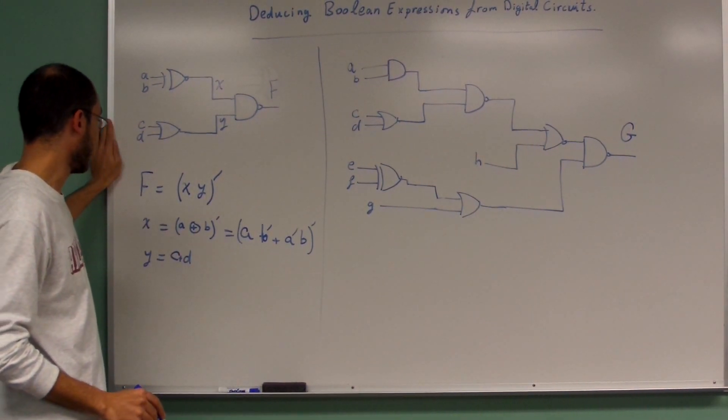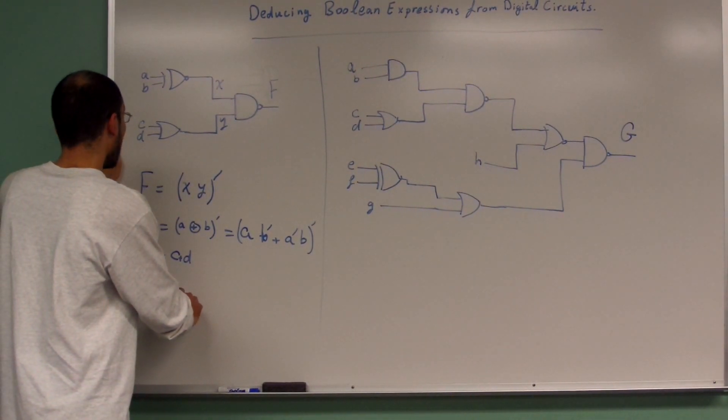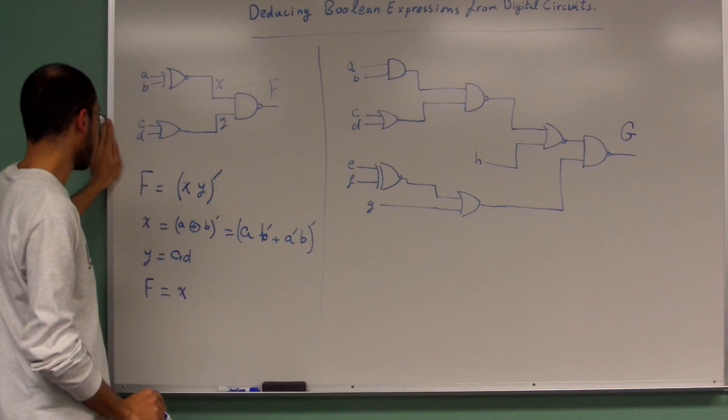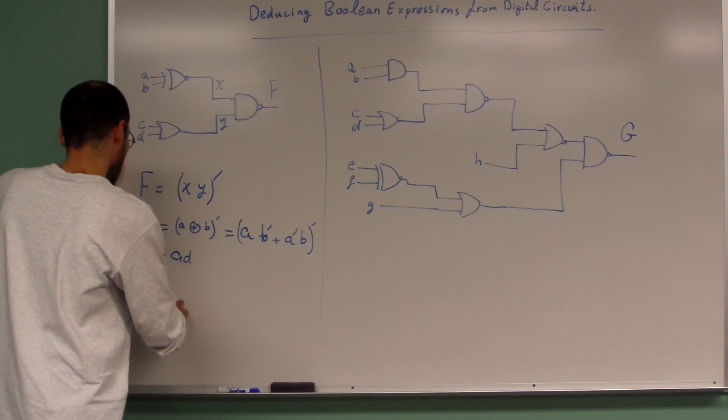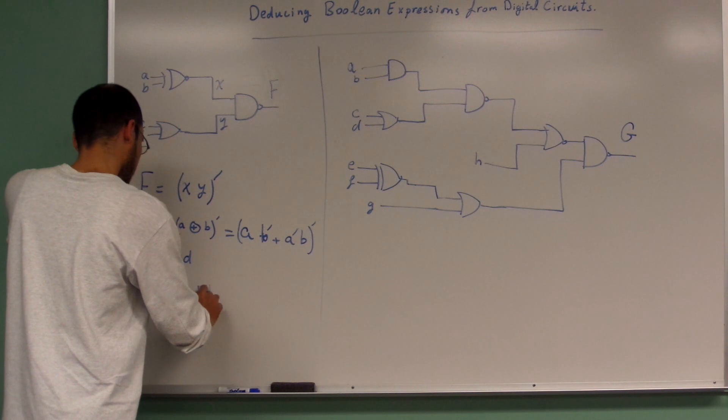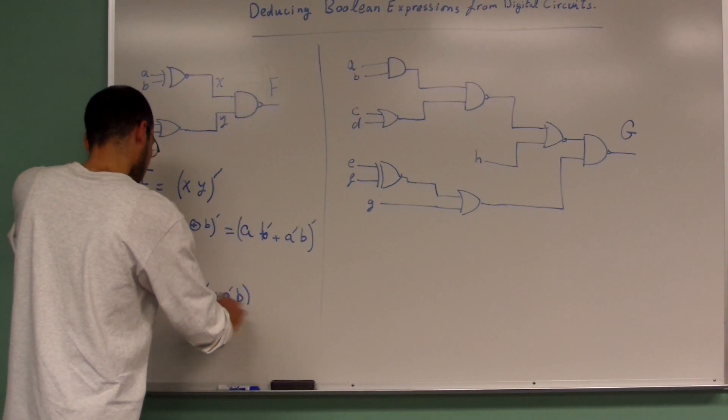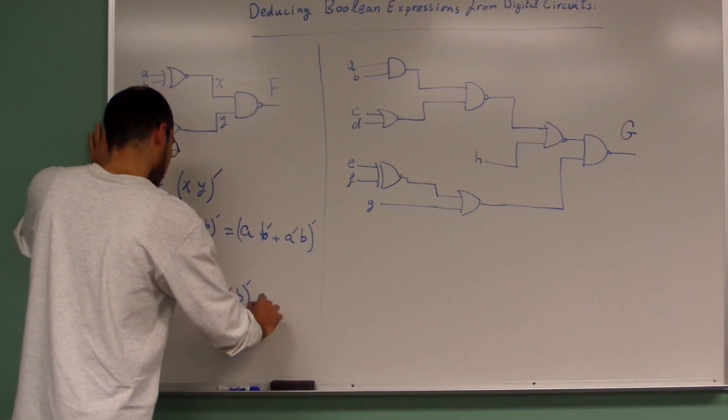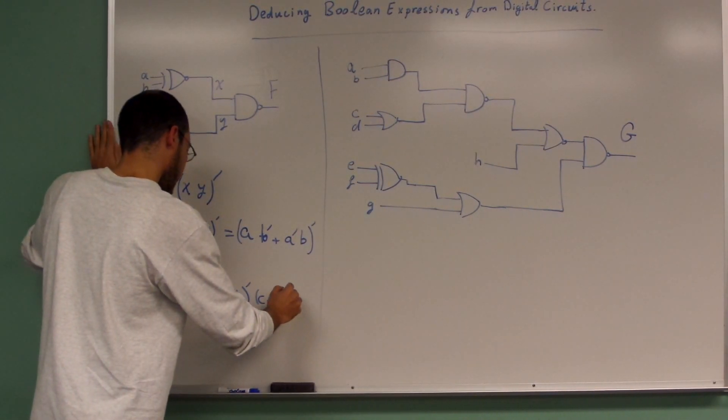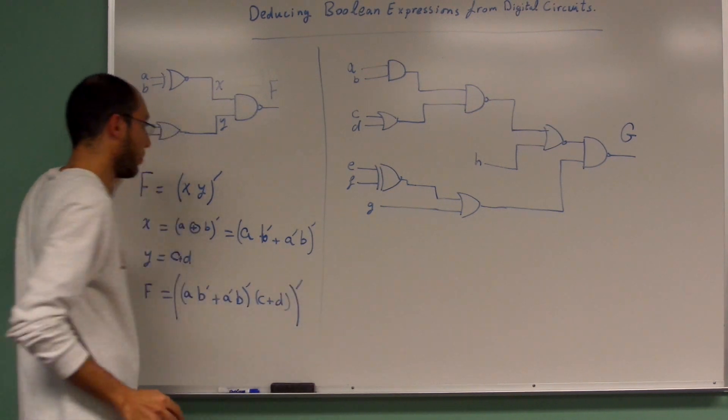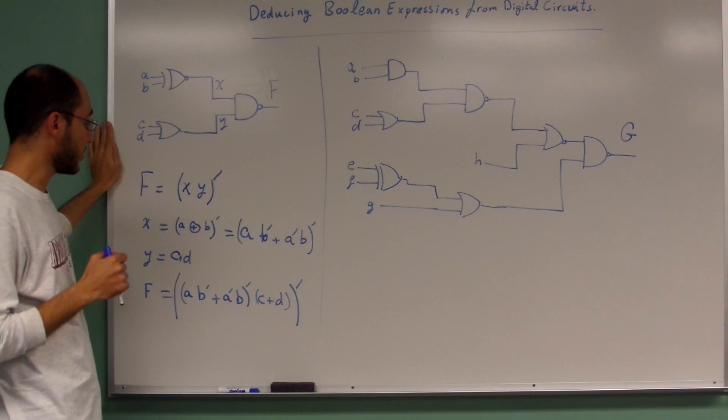Then you can write down F equals X times Y bar. So F equals A B bar plus A bar B, all multiplied by C plus D, bar. And this becomes the final expression.